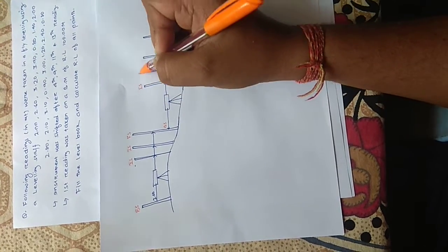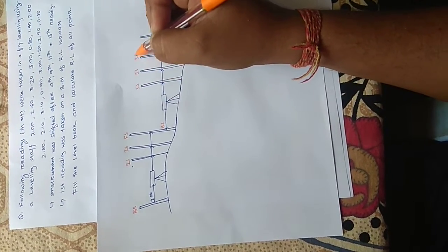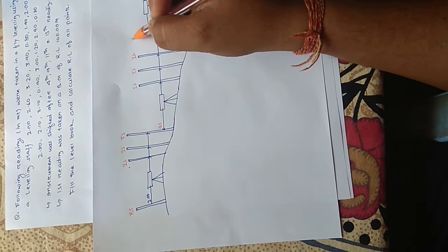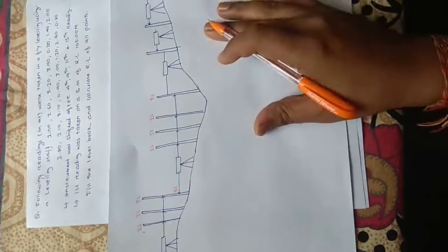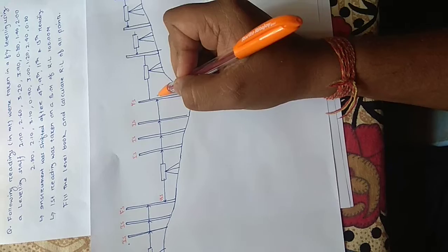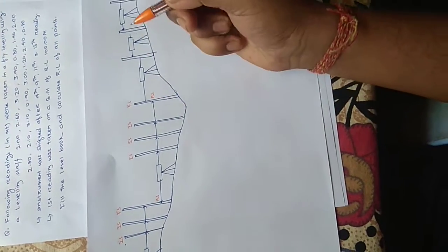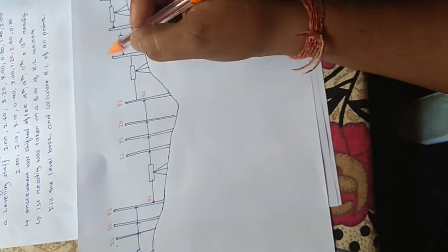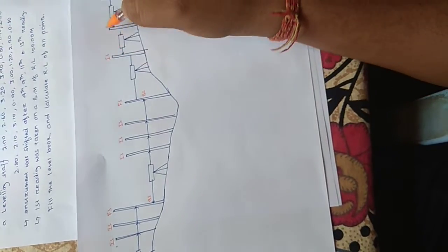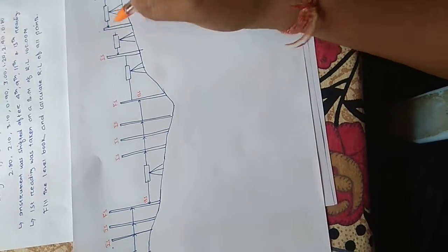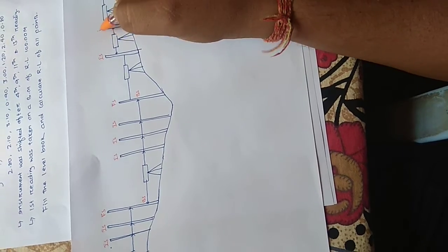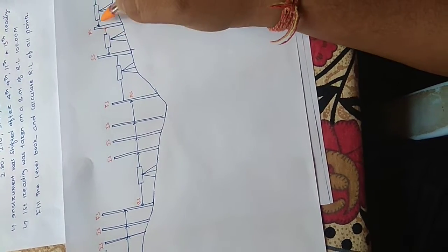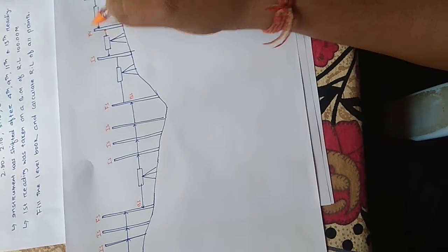Again the instrument is changed, so the next reading becomes the backsight, followed by intermediate sights, and the last reading becomes the foresight. Again if we change the instrument, that becomes the backsight, then an intermediate sight, then the last reading becomes the foresight, and so on for each subsequent setup.